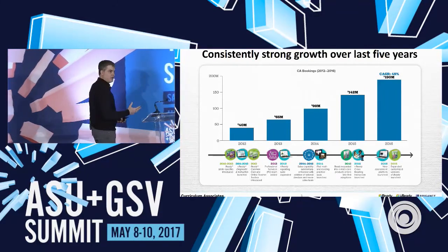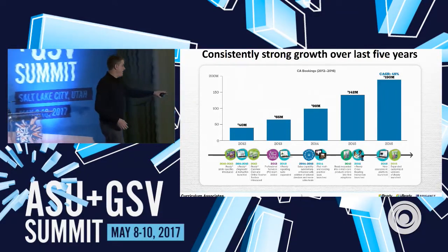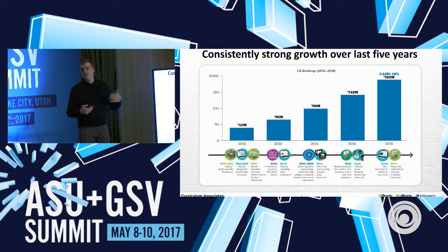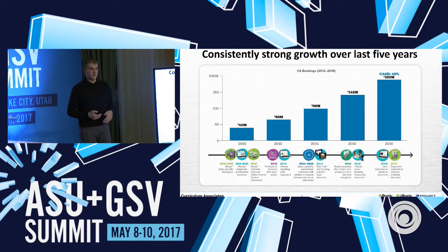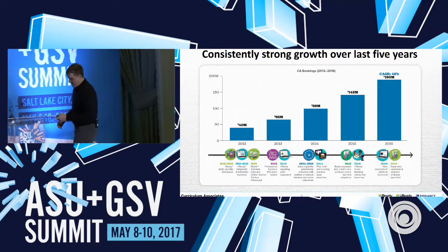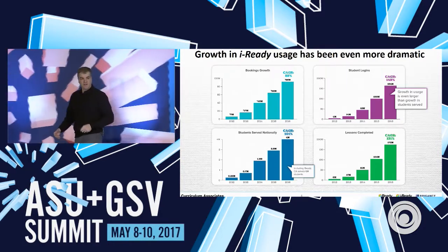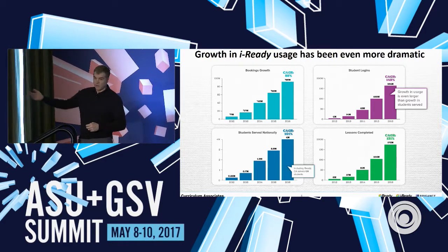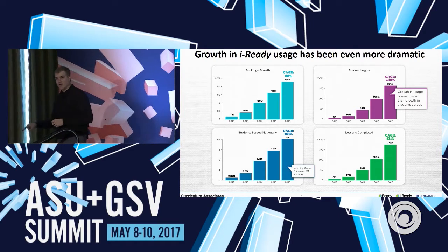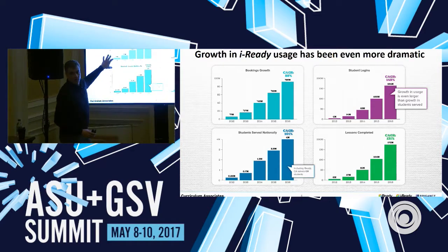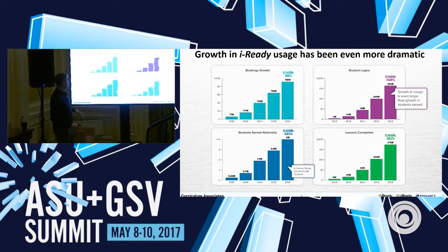A little bit about our growth. We've experienced a lot of growth. We had less than $40 million in bookings. We defer revenue because it's software as a service — over the life of a contract, which is typically a year but can occasionally be longer. And it's really grown a lot. When you break down that growth, the iReady portion, which is now the majority of the company, shows 88% compounded annual growth over the last four years.